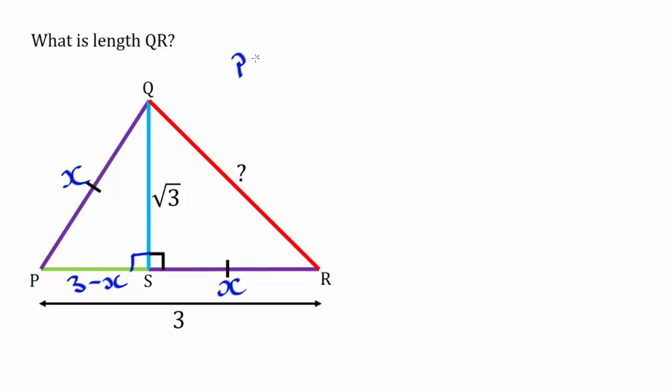So we'd be doing PS squared add SQ squared equals PQ squared. So let's do that now: 3 minus X all squared and add root 3 squared is equal to X squared.